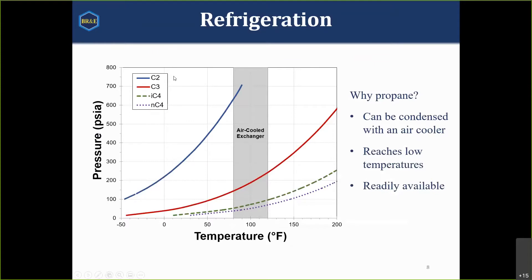Why do we use propane? We could use ethane, ethylene, isobutane, or normal butane. Looking at the pressure-temperature diagram for ethane, propane, isobutane, and normal butane — since these are pure components, the phase envelope collapses to a straight line, essentially the boiling pressure for any given temperature. The condenser temperature is largely set by outdoor conditions; most of the time the condenser is an air-cooled exchanger, and air coolers will get you down to about 80 to 120 degrees Fahrenheit — in Texas it's probably closer to 120.